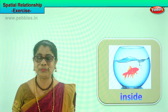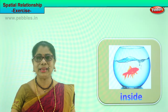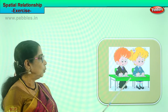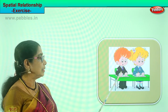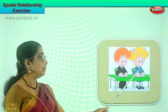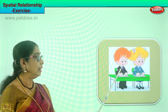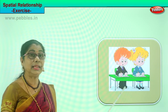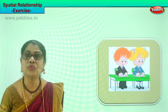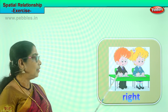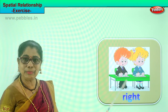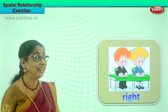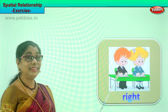Let's look at another picture. Where is the little girl sitting? The little girl is on the left. But where is the little boy sitting? He is sitting on the right side of the girl.